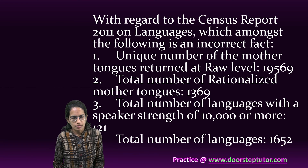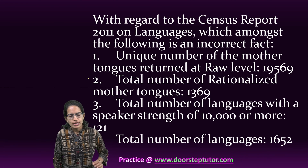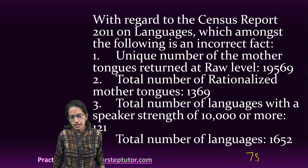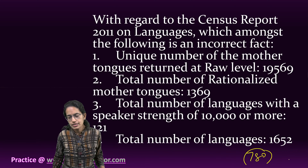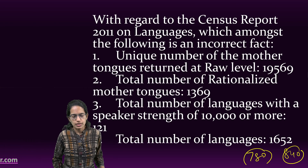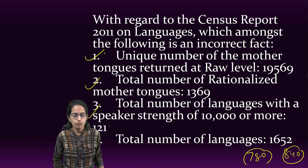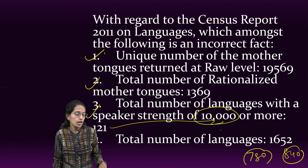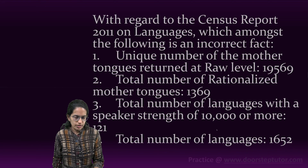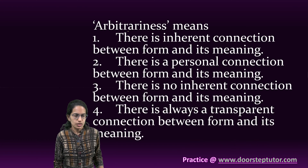The very first question is from the Census Report 2011. According to the Census Report, the total number of languages in India is 780, second highest after Papua New Guinea which has 840. So, the fourth option is incorrect. All three remaining statements are correct. There are nearly 121 languages which have more than 10,000 people who speak them. This is one of the kinds of questions that appear.